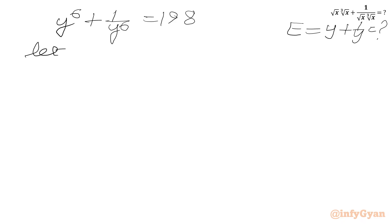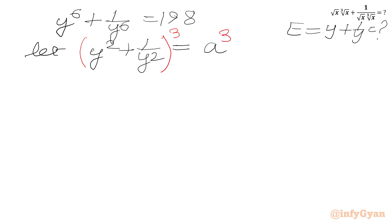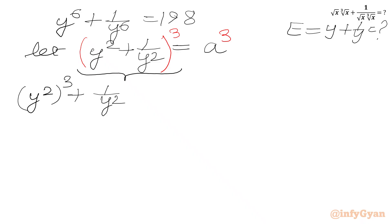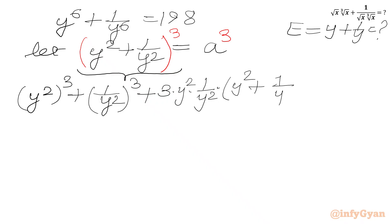Now let a = y² + 1/y². We will cube both sides, applying the (a + b)³ formula on the left-hand side. This gives (y²)³ + (1/y²)³ + 3·y²·(1/y²)·(y² + 1/y²) = a³. The 3ab term simplifies to 3 times a.